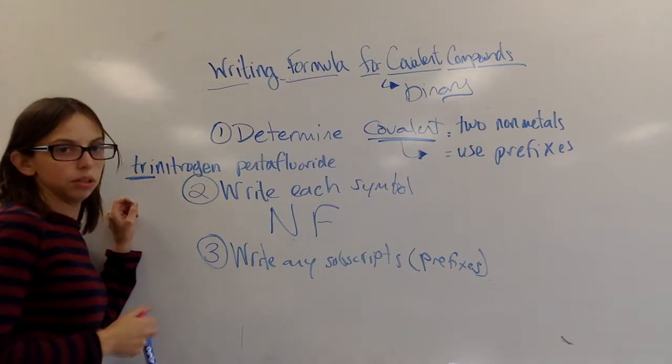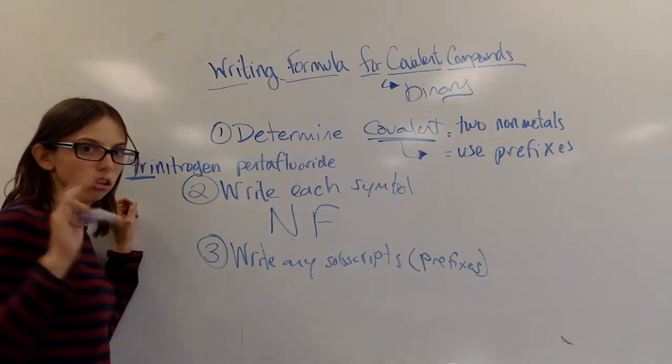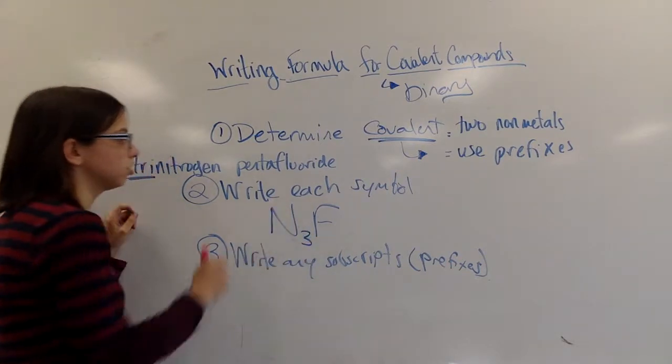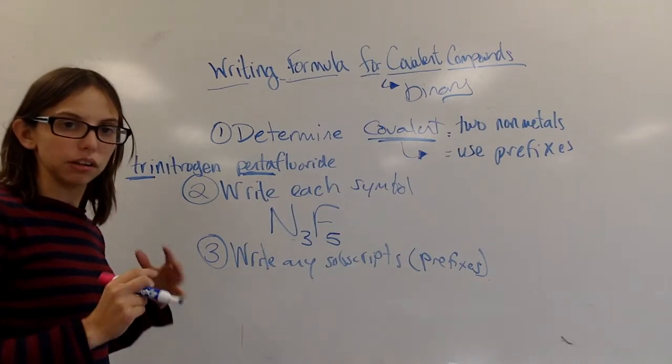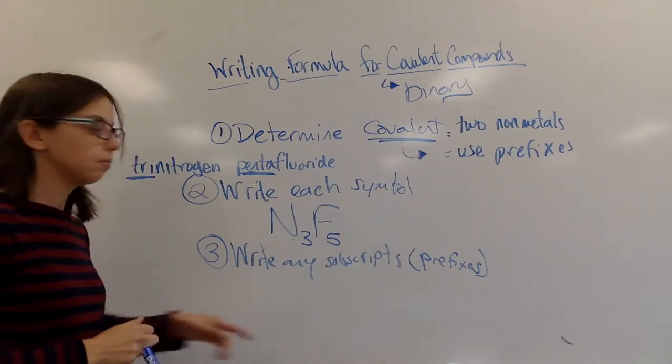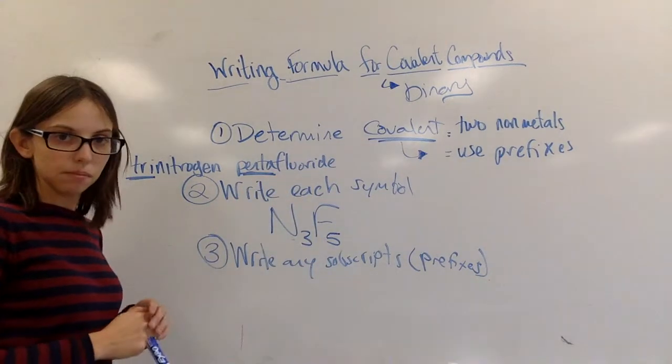Tri here. A tricycle has how many wheels? Very good. So I have three nitrogens. Penta. Penta is five. The pentagon is a five-sided building outside of Washington, D.C. Five. Five fluorines.